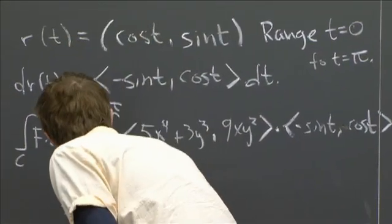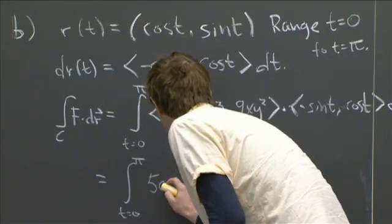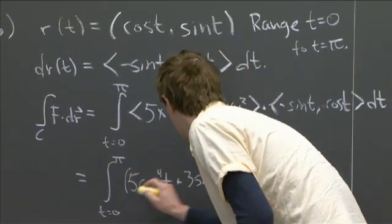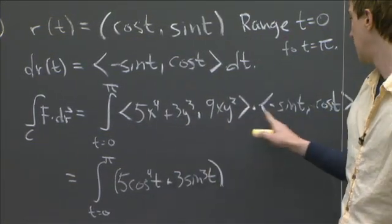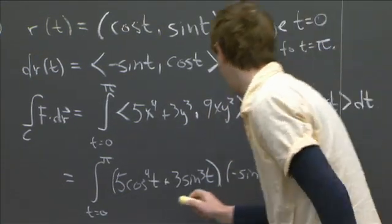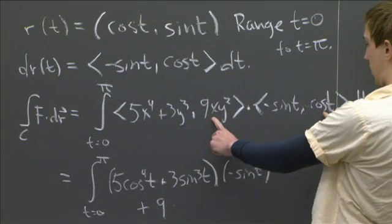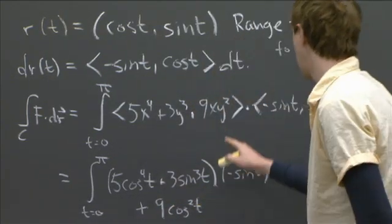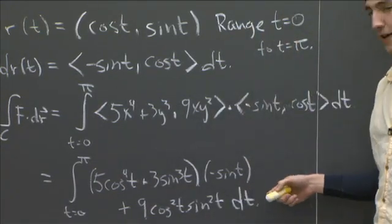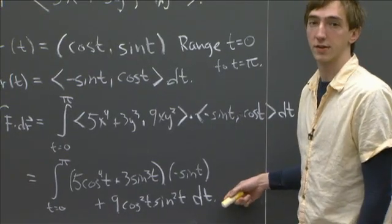So we can write this all out. So we have 5 cos to the fourth t plus 3 sine cubed t. So that's this guy written out in terms of t. And then we multiply it by a negative sine t. And then to that we add the other component. So we have plus a 9. So we have cos t coming from the x and another cos t here. So we have cos squared t. And we have a sine squared t dt. OK, so that's what it means to compute this line integral directly. And it's not something that I look forward to doing. So let's see if we can use path independence to make our lives a little bit simpler.